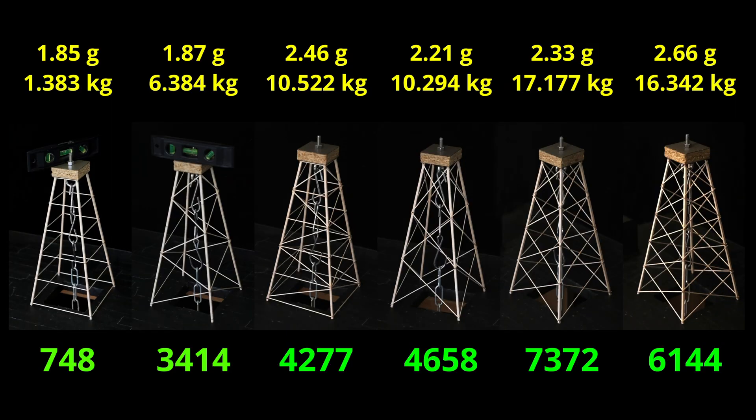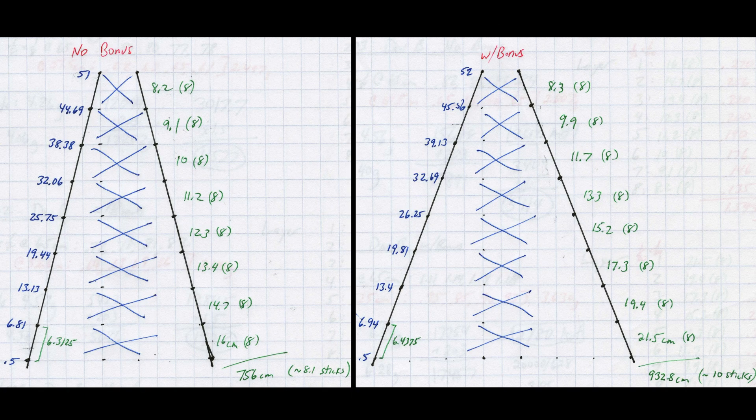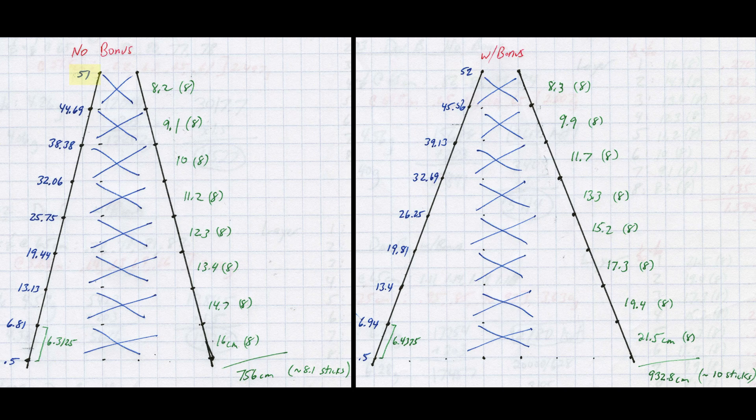The next step was to pick the number of cross bracing layers. I chose 8 layers to begin with because my mini tower series showed that 4 layers worked really well for a 25 cm tall tower. Accounting for the angle of the tower, the leg length is 51 cm for the non-bonus version and 52 cm for the bonus version. The easiest way to figure that out is to just put a stick on the jig and measure it.